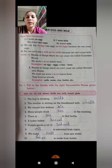Exercise 1, fill in the blanks with the right uncountable nouns given below. Yahan aapko kuch uncountable noun diye hai joh humein fill up karne hai. The list is: salt, air, oil, ink, wheat, chalk, tea, milk, bread, ghee.